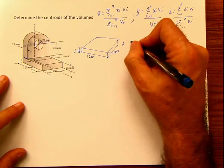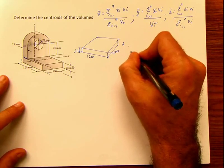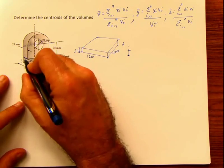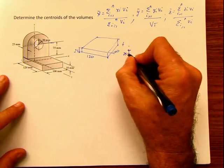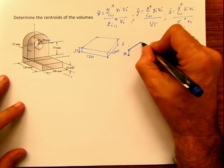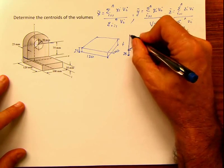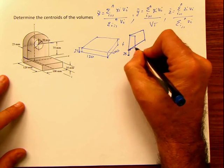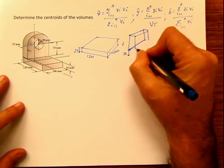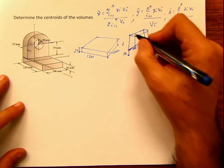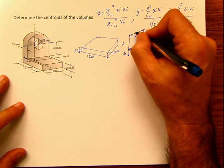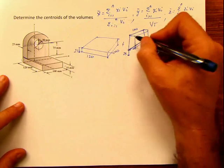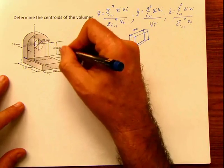The second part is going to be elevated 25 millimeters. The distance is 100, the same as before, and the height given here is 75.